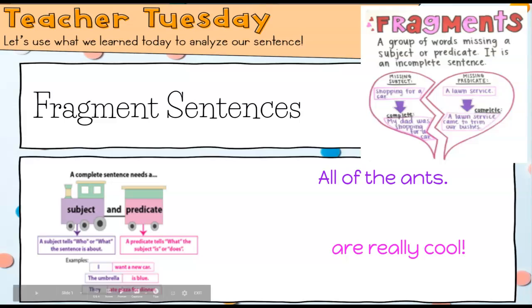We know that a complete sentence, if we look over here on the train, a complete sentence has to have a subject and a predicate. The subject is who the sentence is about and the predicate tells us what the subject is doing or is. In a fragment sentence we are going to learn that sometimes a fragment sentence is a group of words that's either missing the subject or it's missing the predicate, meaning it's a fragment sentence. It is not a complete sentence.